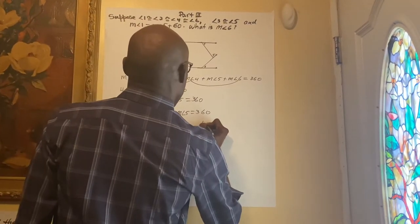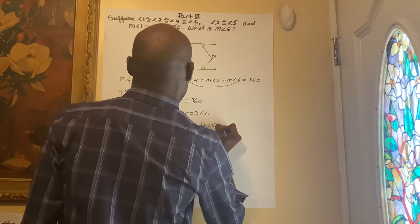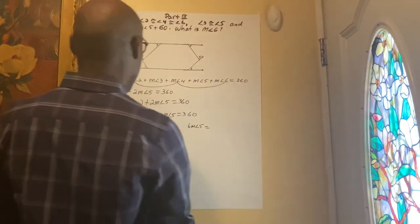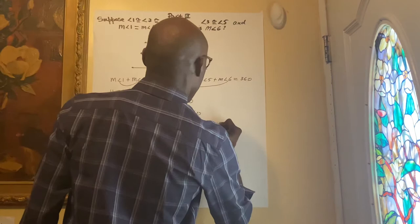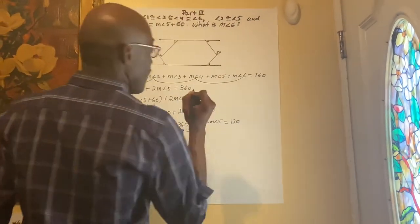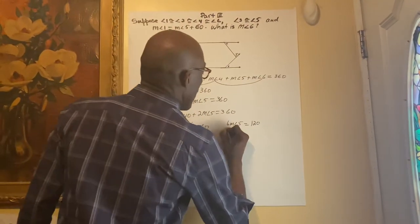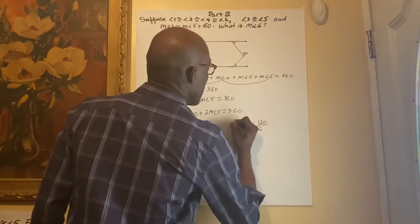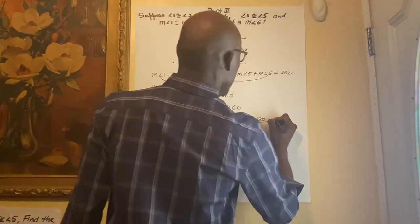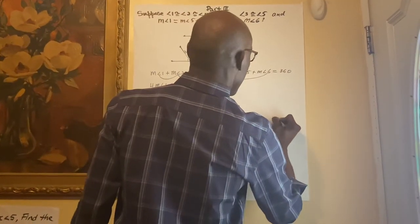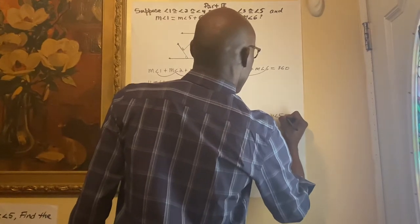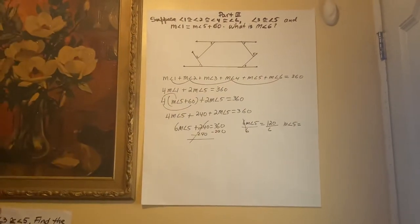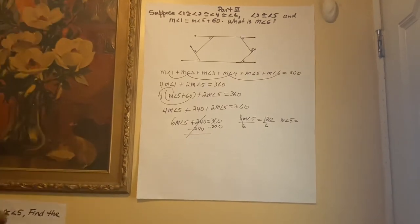Subtract 240 from both sides: 6 measure angle 5 equals 360 minus 240. Now divide both sides by 6. Measure angle 5 equals 120 divided by 6, which equals 20.